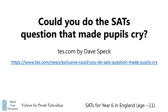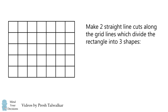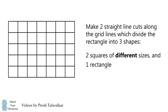This problem was given to Year 6 students in England who were aged 11 years old. In the following diagram, make two straight line cuts along the grid lines which divide the rectangle into three shapes. You want two squares of different sizes and one rectangle. Pause the video if you'd like to give it a try, and when you're ready, keep watching to learn how to solve this problem.